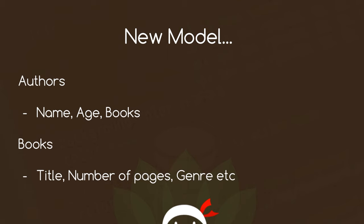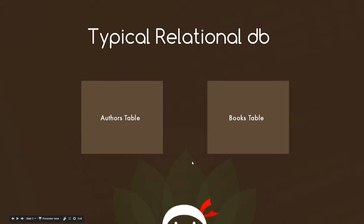We could have our authors with name, age, books — information about the authors. And then we could also have information about each book as well, such as a title, number of pages, genre, etc. You might think, because we've got information about authors and also information about books, that we're going to need two collections — essentially a collection of authors and a collection of books. This is typically the way we do it in a relational database.